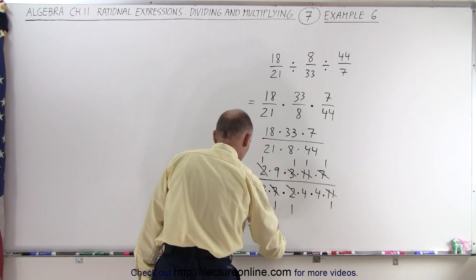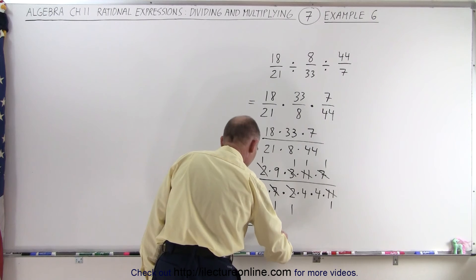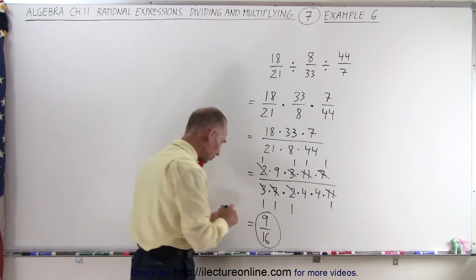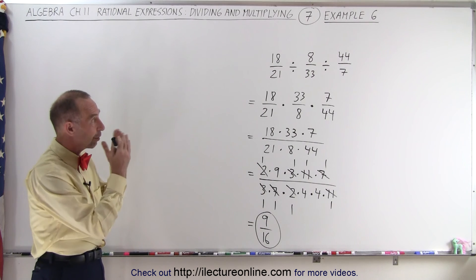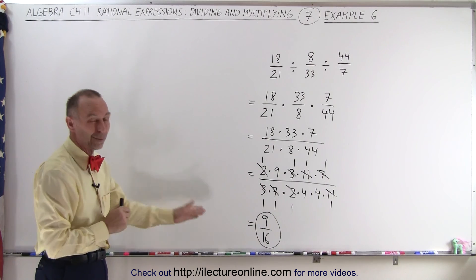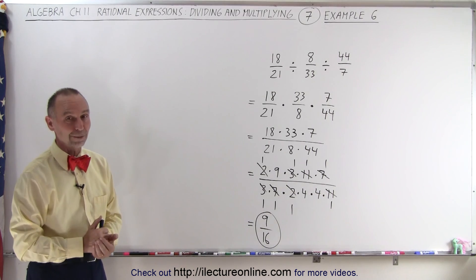so that means in the numerator we have a 9, in the denominator we have a 16, and that's the simplified result of that initial expression. Again, if you don't follow the rules strictly there, you will not get the right answer. But that is how it's done.